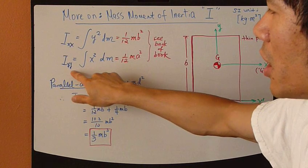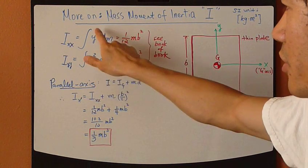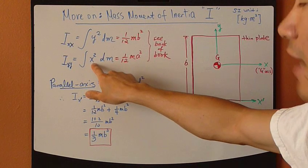Now for moment inertia about y-axis, it's defined very similarly, except that you take the x-coordinate squared.